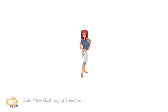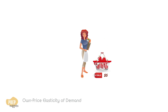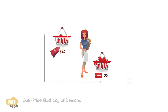Imagine you want to buy apples. When the price is low, you probably want to buy more. When the price is high, you probably want to buy less. If everyone's behavior is like you, you can plot a downward sloping demand curve of price against the quantity demanded.